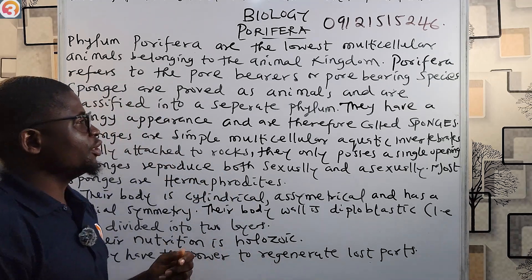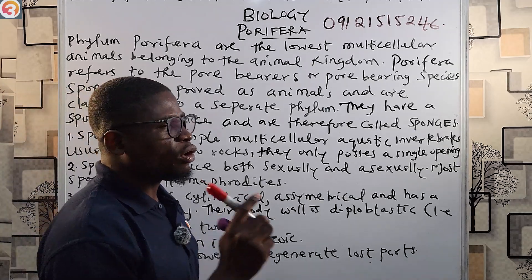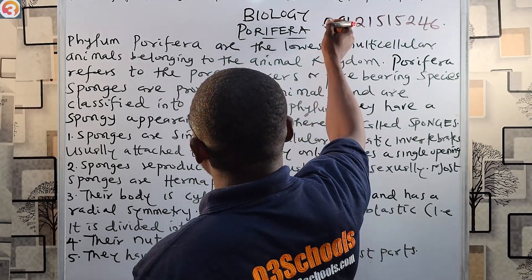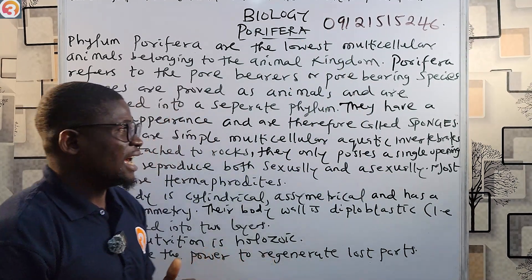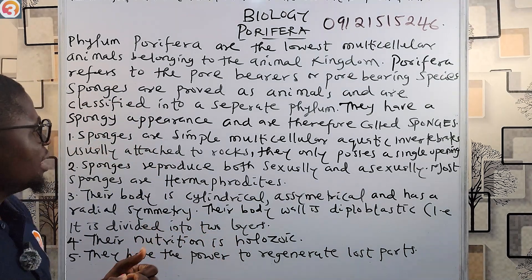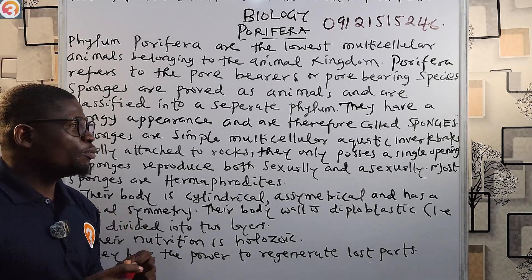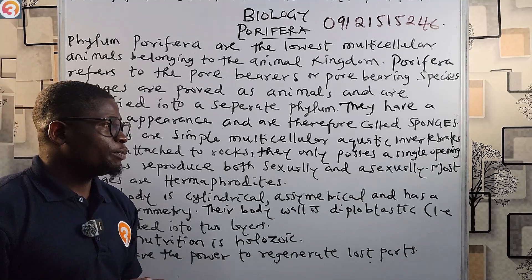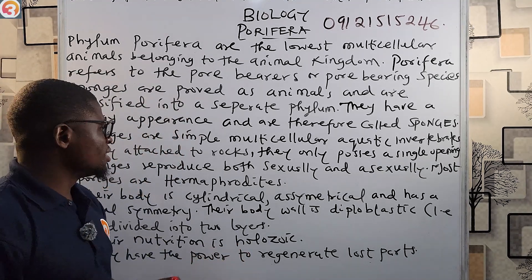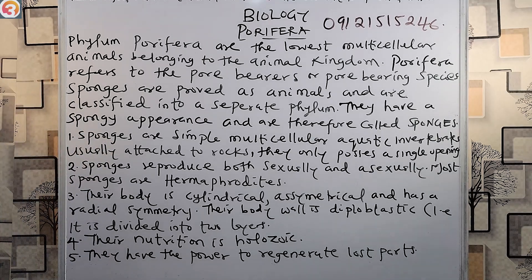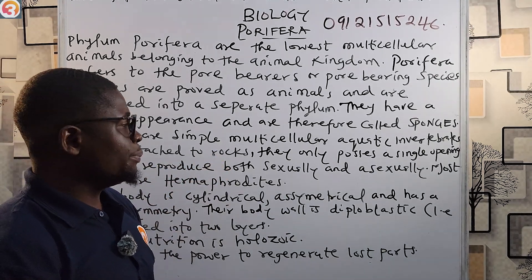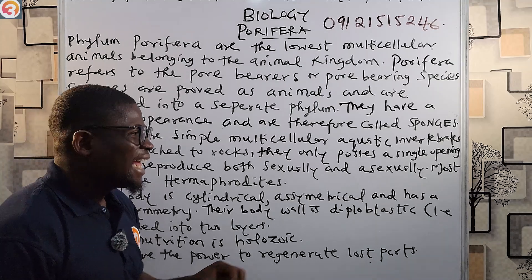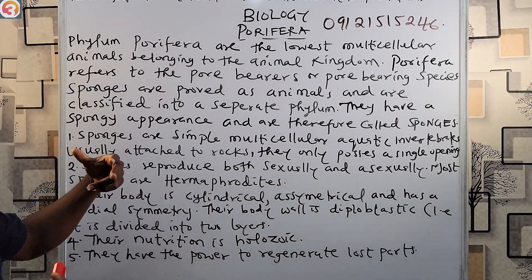They have a spongy appearance and are therefore called sponges — which is why we also call Porifera 'sponges.' Sponges are simple multicellular aquatic invertebrates, usually attached to rocks, and they possess only a single opening.